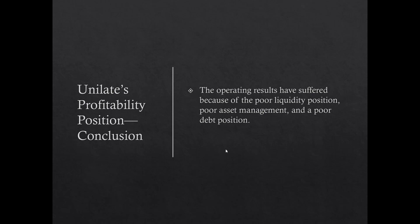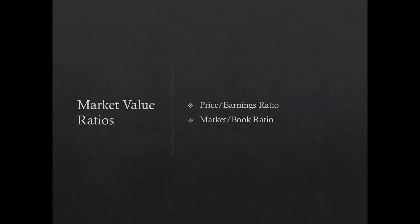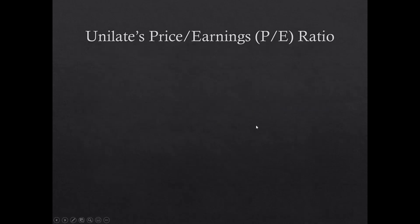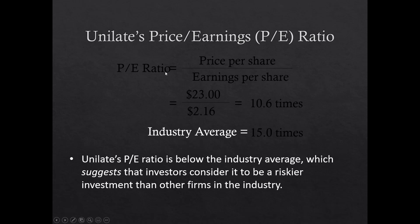The operating results have suffered because of poor liquidity, poor asset management, and poor debt position — all impacting profitability. Market value ratios: the P/E ratio is price per share divided by earnings per share: $23 / $2.16 = 10.6 times; industry average is 15 times. A below-average P/E means investors are paying less for each dollar of earnings — because the stock price reflects expected future cash flows, not past performance, and the market is saying it doesn't expect strong future performance.